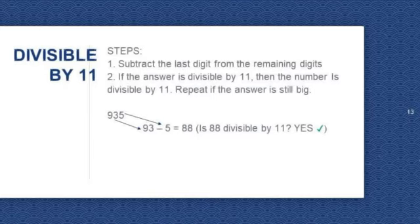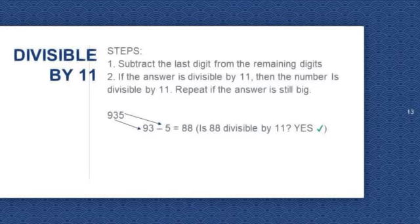Let's take a look at this example. 935. The last digit is 5. Subtract it from the remaining digits, which are 93. 93 minus 5 is equal to 88. Is 88 divisible by 11? Yes. So 935 is divisible by 11.